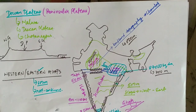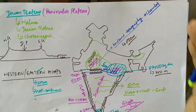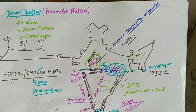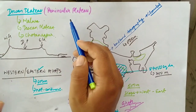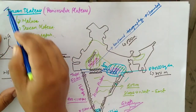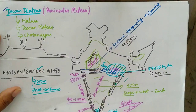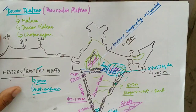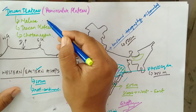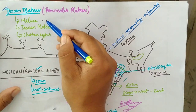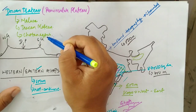Hello students, welcome to another video of the chapter Physiographic Division. Today we are going to discuss the Peninsular Plateau or Deccan Plateau. The Peninsular Plateau is considered one of the oldest landmasses on the earth's surface. It is also divided into three parts: Malwa Plateau,